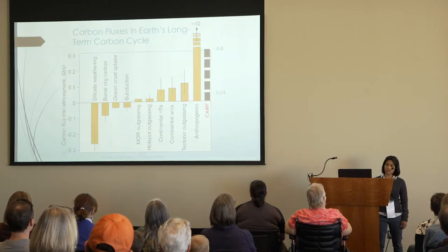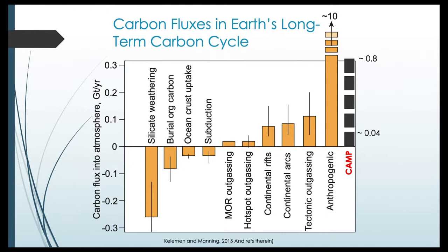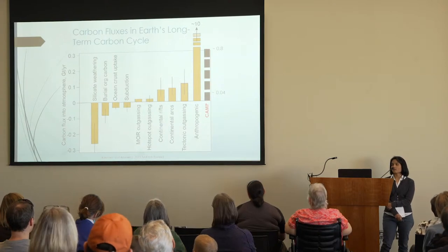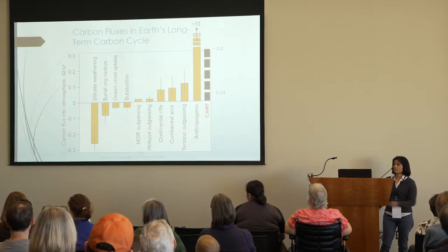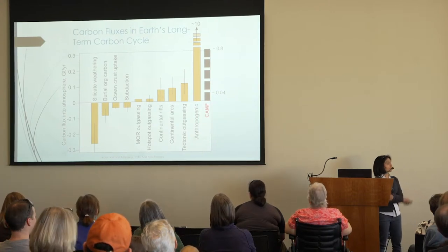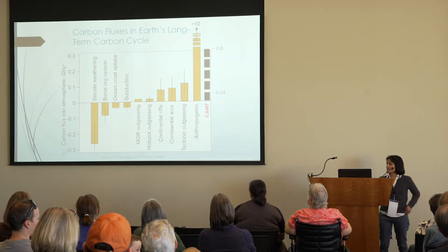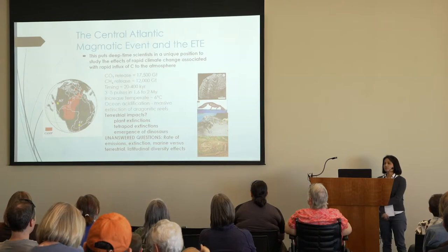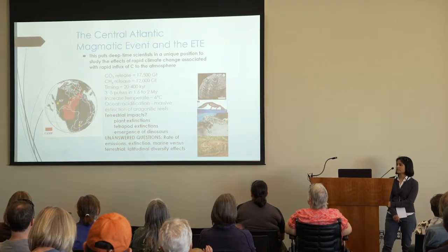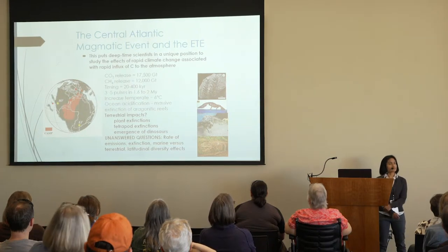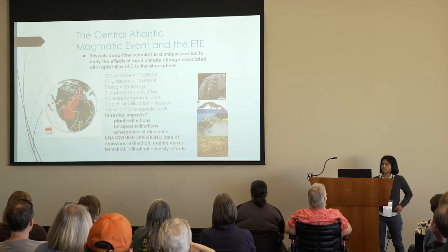Understanding the interplay between the biosphere, atmosphere, and climate is really important for Earth's future. When you look at the flux of carbon into the atmosphere today, it's on the order of the flux from the Central Atlantic Magmatic Province — comparable to the anthropogenic release of carbon into the atmosphere. This puts deep-time scientists like paleontologists and geologists in a unique position to study the effects of rapid climate change associated with an influx of carbon into the atmosphere.